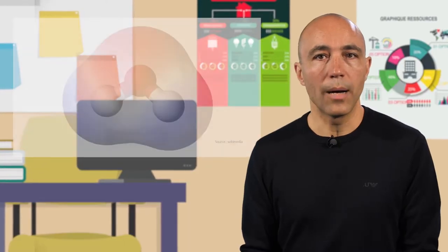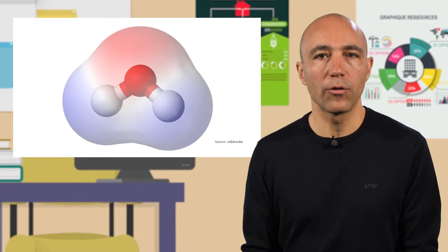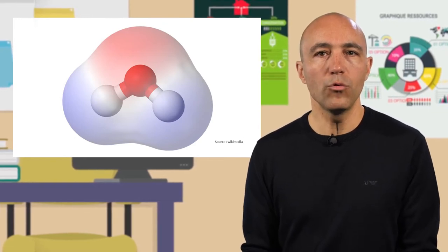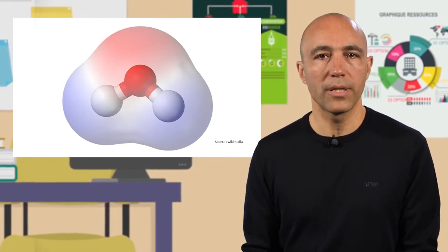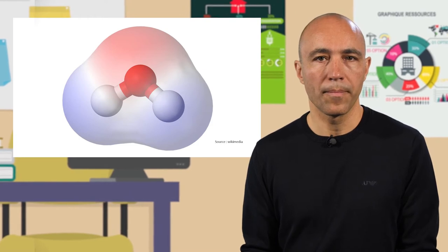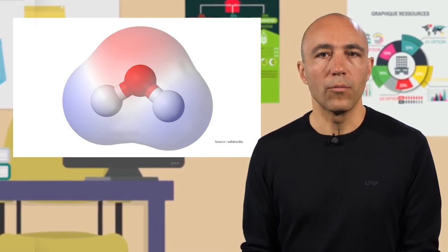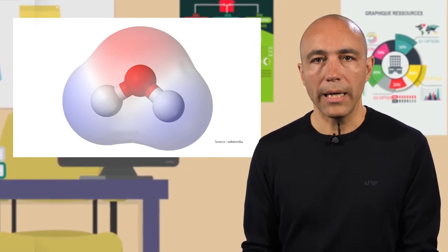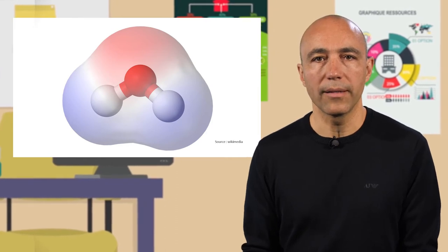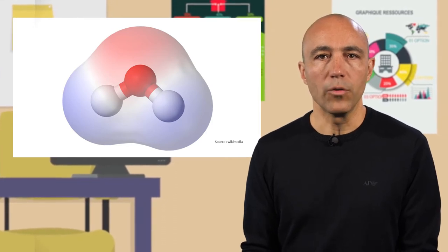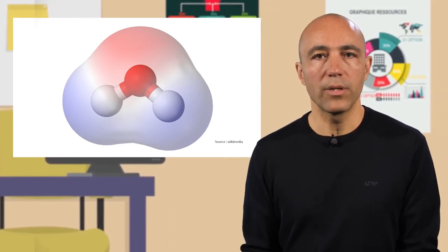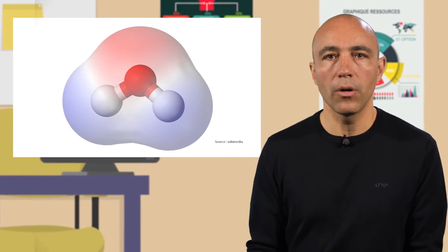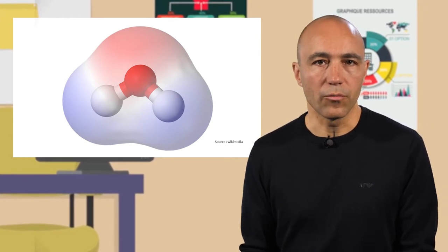Attention toutefois : un modèle scientifique n'est jamais valable que dans un domaine de validité défini, plus ou moins étendu selon son degré de sophistication. Dans cette représentation de la molécule d'eau, les couleurs sont fausses et la rigidité ne reflète pas la réalité. Mais le modèle moléculaire reste néanmoins très utile aux chimistes pour décrire, par exemple, l'angle moyen entre les liaisons.